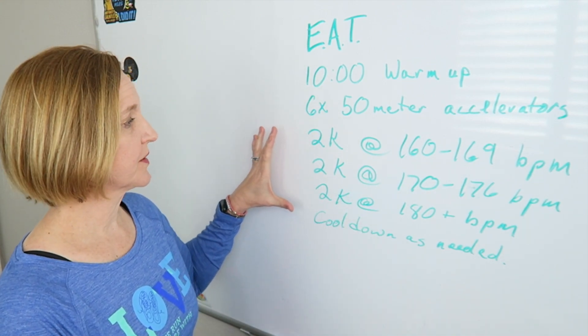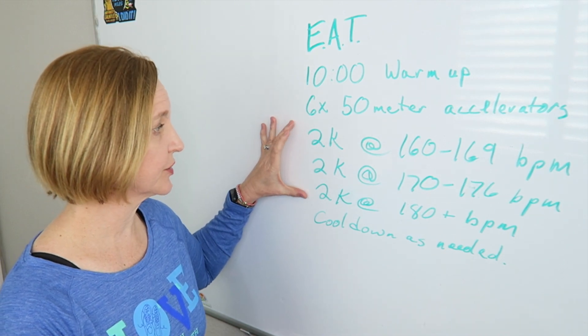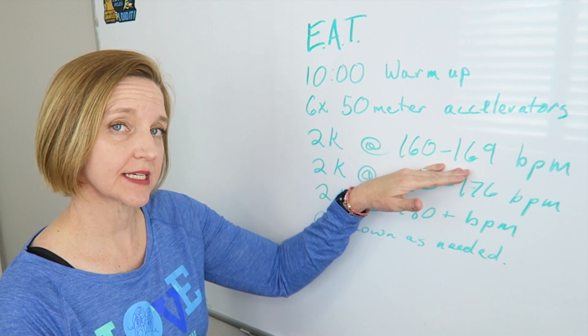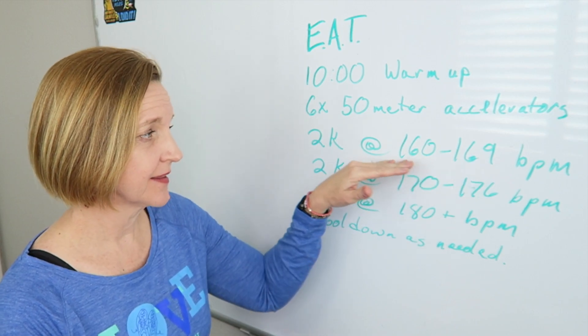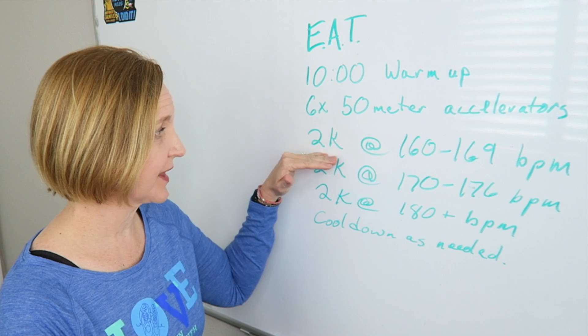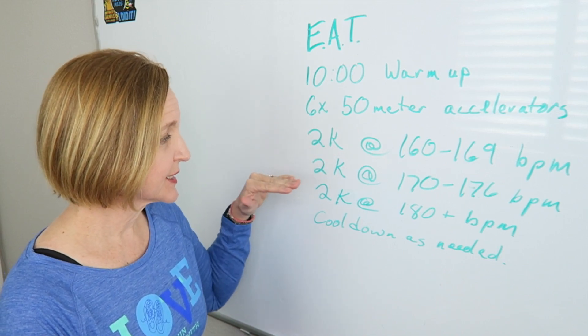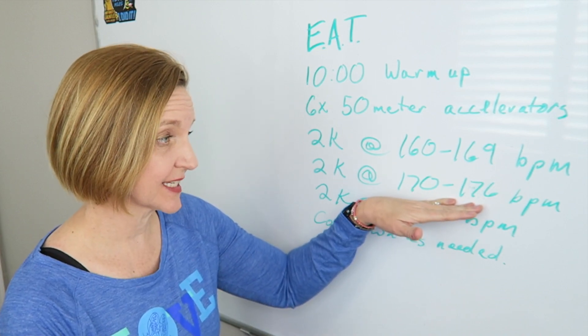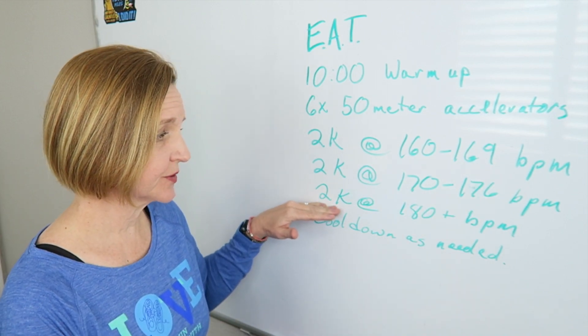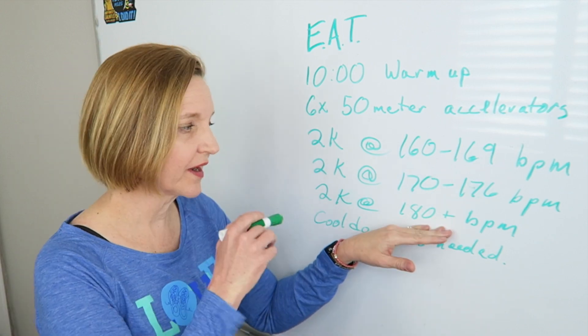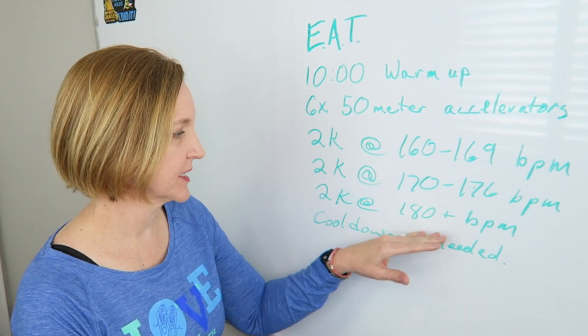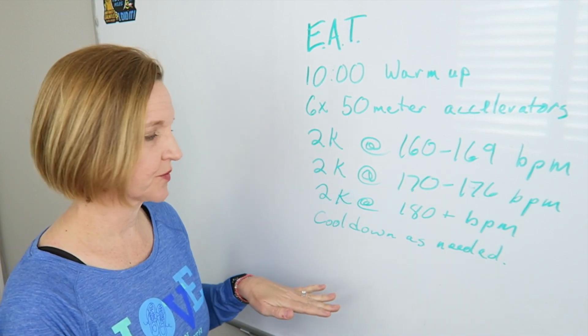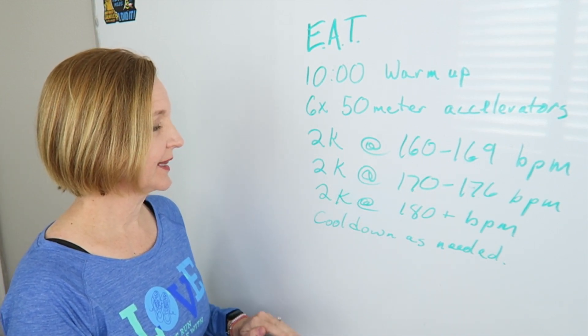Then this is where the test starts. So we do the first 2K at 160 to 169 beats per minute. This is the range we want to stay in for that entire 2K. The second 2K, we're going to get up to 170 to 176 beats per minute. The third 2K at over 180 beats per minute. So there's no break in between these. You just keep going faster to get into these ranges.